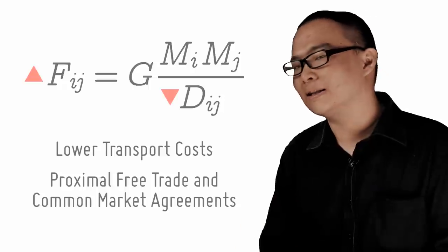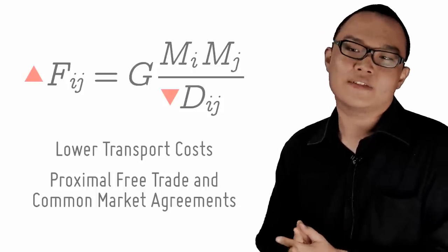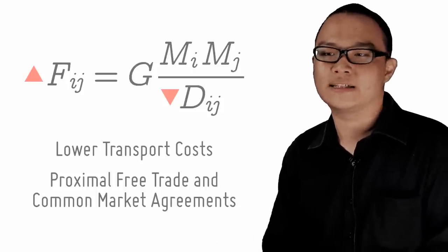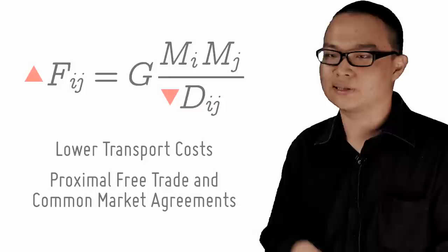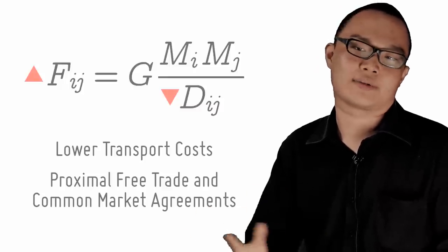The second means that countries close to one another tend to be very nice buddies for reasons of national security and often have ratified free trade agreements or common market agreements such as NAFTA, the ASEAN, the African Union or the EU that lowers trade barriers.